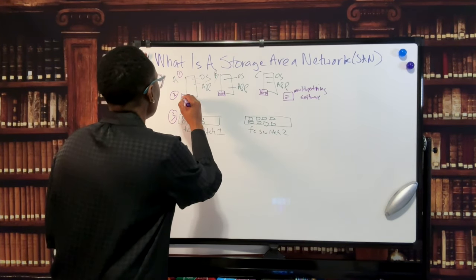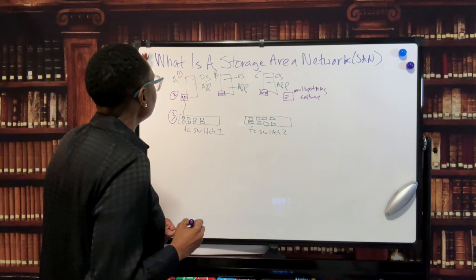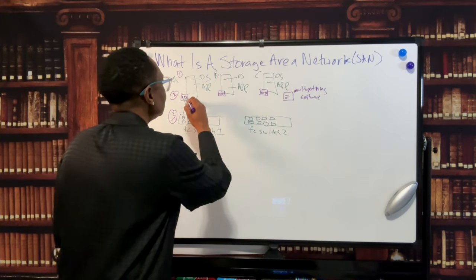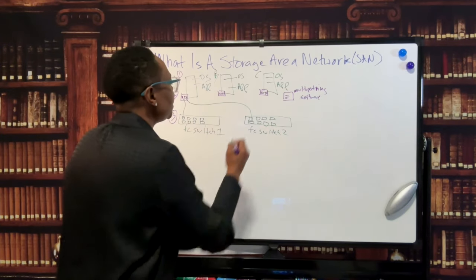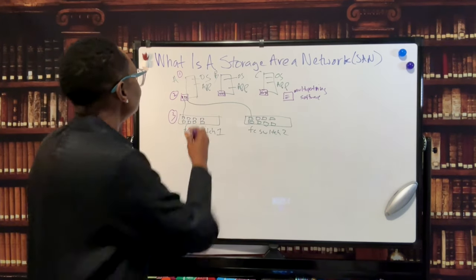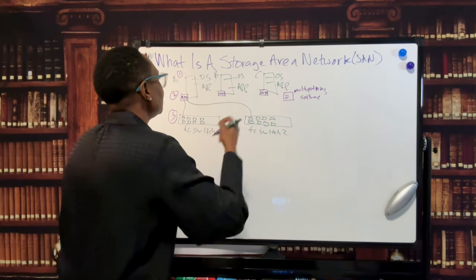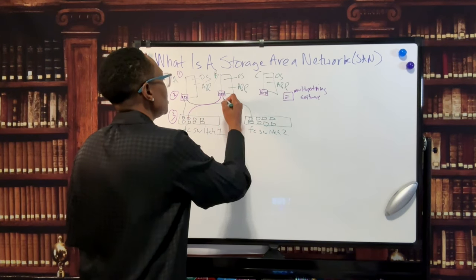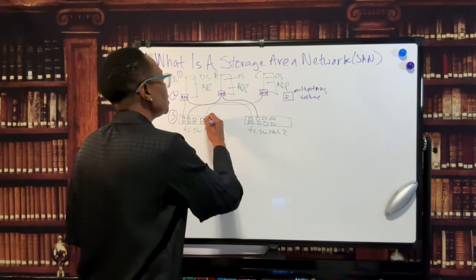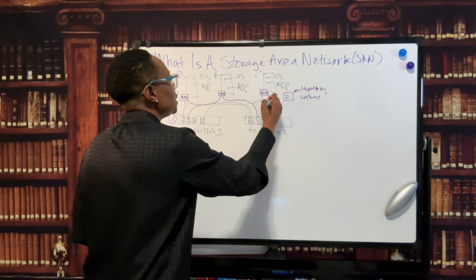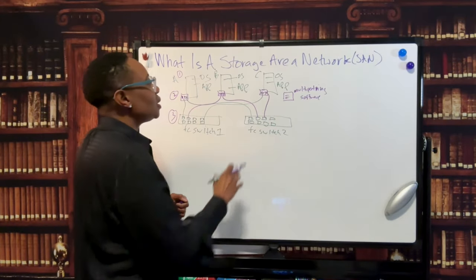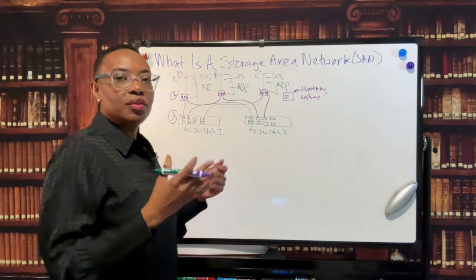There is a fiber channel cable that goes from the HBA adapter card to switch one, and there's another cable that goes to switch two. This is the redundant paths. Same thing for Server B, same thing for Server C.